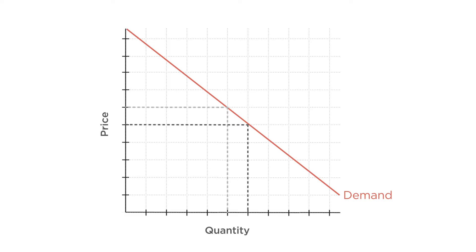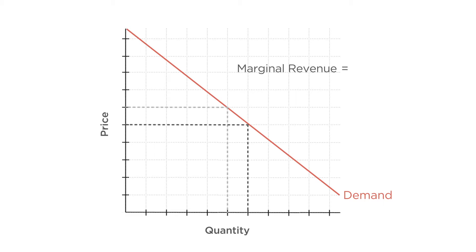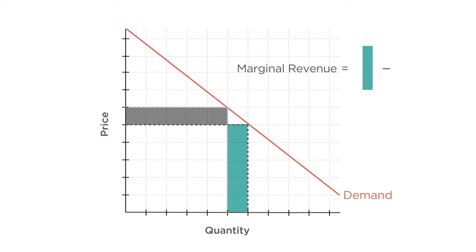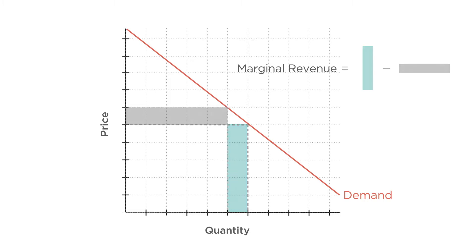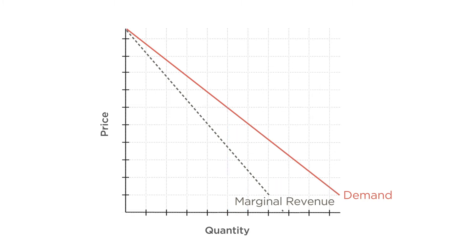And if the firm can't price discriminate, it must lower the price for everyone. The marginal revenue from that additional sale is the new price, less all the revenue lost from this lower price being applied to previous sales. Graphically, this results in a marginal revenue curve which is always below the demand curve faced by the monopoly.